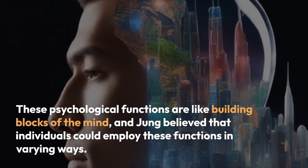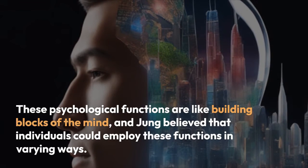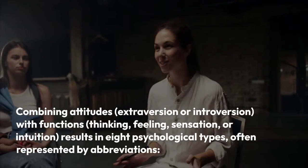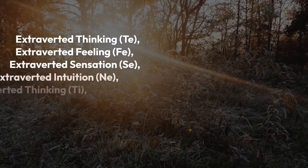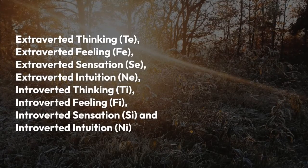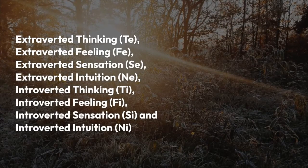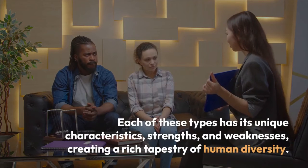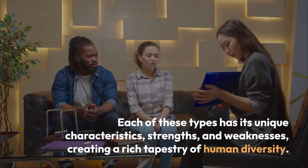These psychological functions are like building blocks of the mind, and Jung believed that individuals could employ these functions in varying ways. Combining attitudes with functions results in eight psychological types, often represented by abbreviations: extroverted thinking, extroverted feeling, extroverted sensation, extroverted intuition, introverted thinking, introverted feeling, introverted sensation, and introverted intuition. Each of these types has its unique characteristics, strengths, and weaknesses, creating a rich tapestry of human diversity.